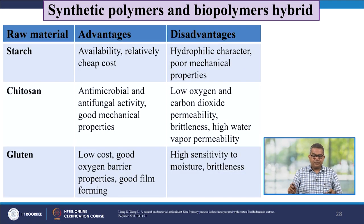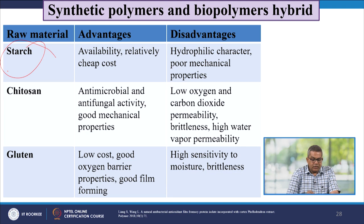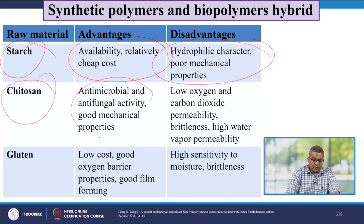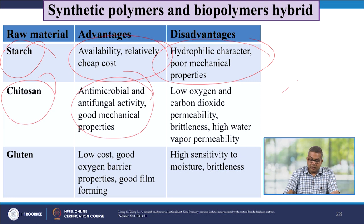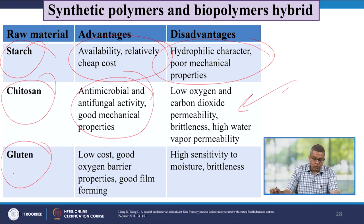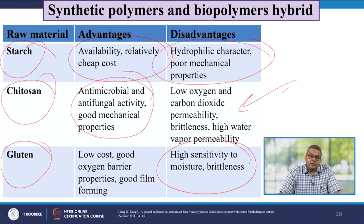Some synthetic polymer and biopolymer hybrids and their properties: starch — advantages are easy availability and relatively cheap; disadvantages are hydrophilic character and poor mechanical properties. Chitosan — possesses antimicrobial and antifungal activity and good mechanical properties, but low oxygen and carbon dioxide permeability, brittleness and high water vapor permeability are disadvantages. Gluten — low cost, good oxygen barrier properties, and good film-forming, but highly sensitive to moisture and brittleness are disadvantages.